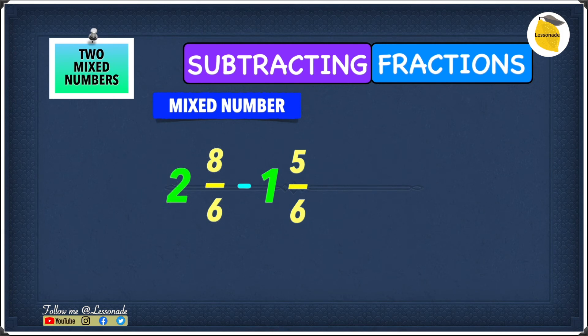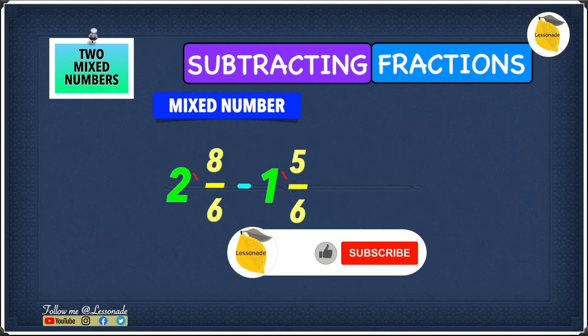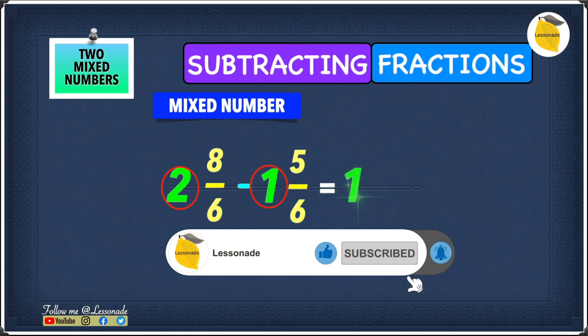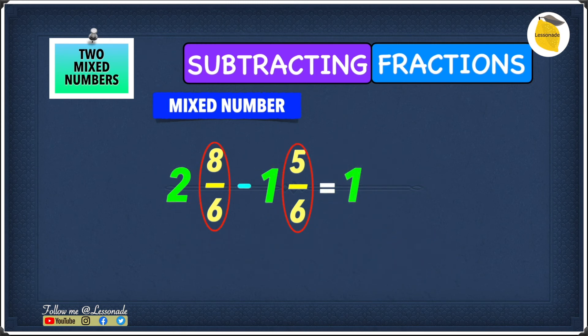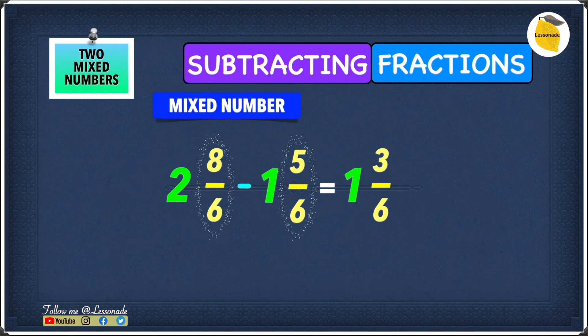So right now we have 2 8/6 minus 1 5/6. And right now, this question is very similar to how it was in the previous one. Let's subtract the whole numbers. 2 minus 1 is obviously 1. And then we can subtract the fraction. 8/6 minus 5/6 will be 3/6.